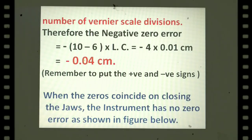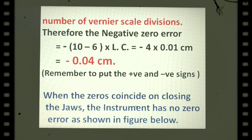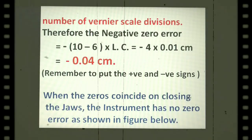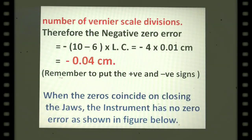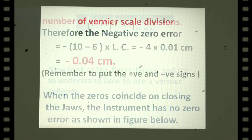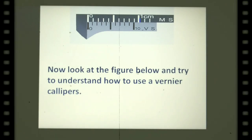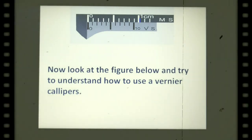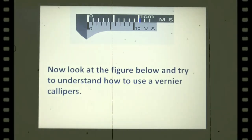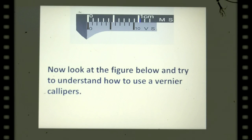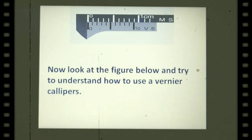Remember to always put the correct positive or negative sign. When the zeros of both scales coincide on closing the jaws, the instrument has no zero error, as shown in the figure. So an instrument may have no zero error, a negative zero error, or a positive zero error.